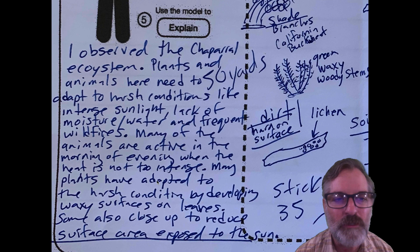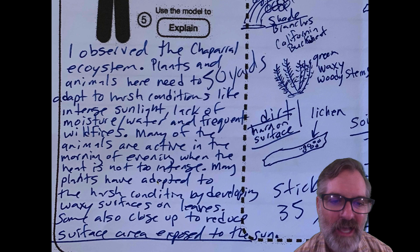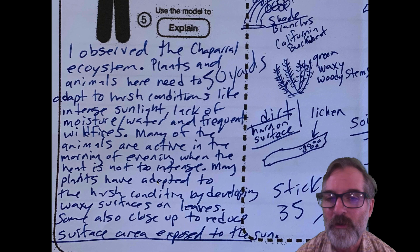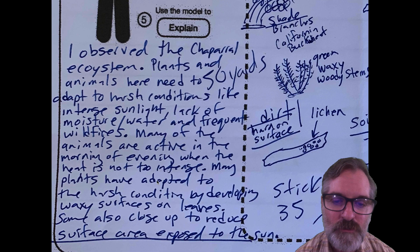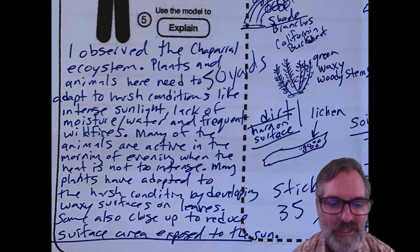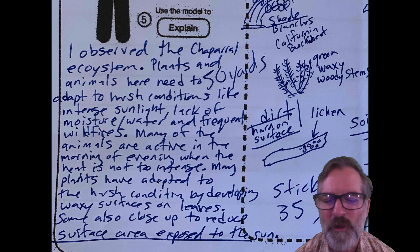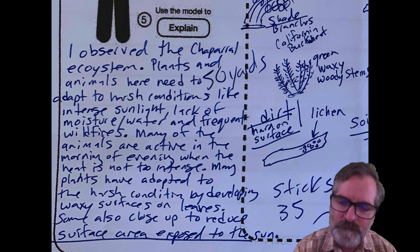Then I did an explanation of my model of what was taking place in my chaparral ecosystem. I observed the chaparral ecosystem — plants and animals here need to adapt to harsh conditions like intense sunlight, lack of moisture, and frequent wildfires. Since I've lived in Ramona, there have been two major wildfires. Many animals are active in the morning or evening when the heat is not as intense. Many plants have adapted by developing waxy surfaces on their leaves, and some also close up to reduce the surface area exposed to the sun at the most intense part of the day.